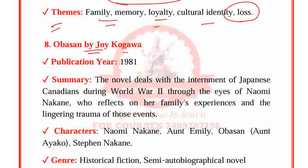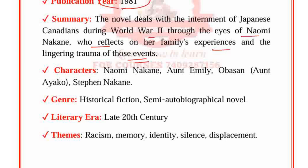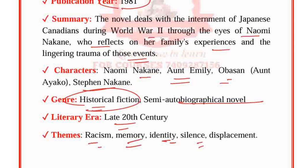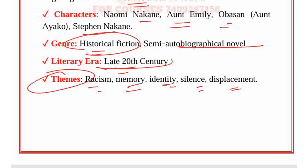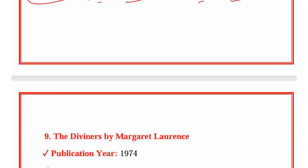Obasan by Joy Kogawa, published in 1981. The novel deals with the internment of Japanese-Canadians during World War II through the eyes of Naomi Nakane, who reflects on her family's experience and the lingering trauma of these events. Characters: Naomi Nakane, Aunt Emily, Obasan, Aunt Aiko and Stephen Nakane. Genre: Historical fiction, Semi-autobiographical novel. Period: 20th century. Themes: Racism, Memory, Identity, Silence and Displacement — common elements of the modern world visible in late 20th century literature.